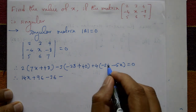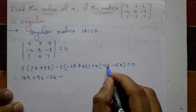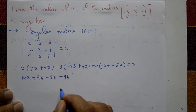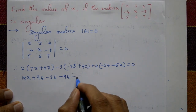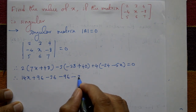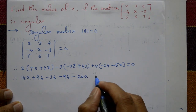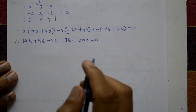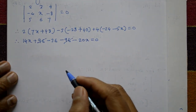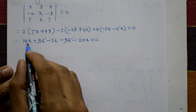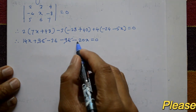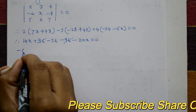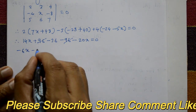4 into -24 is -96, and with the minus sign that gives plus 96. Then 4 into 5 is 20, and x gives -20x. The plus 96 and minus 96 cancel. So 14x minus 20x is -6x, and remaining is -36.